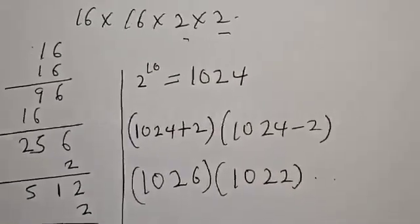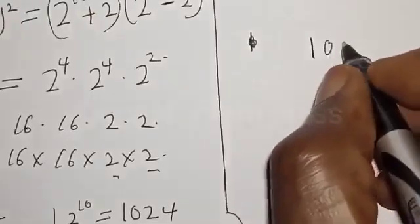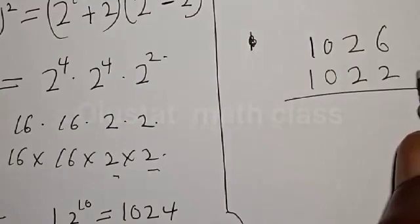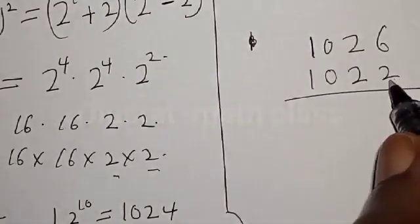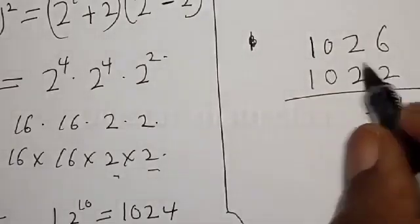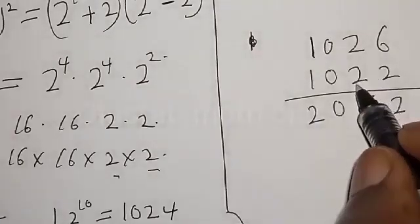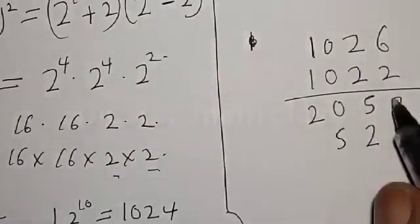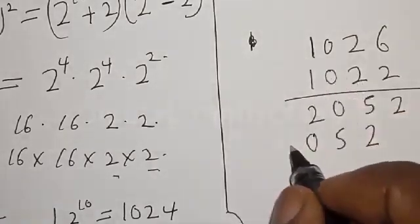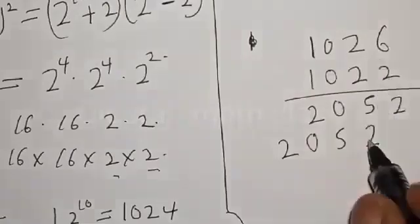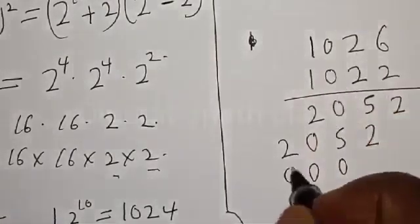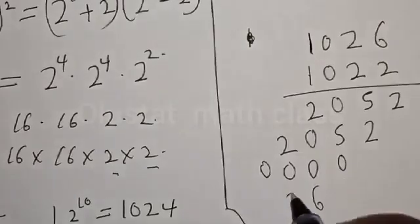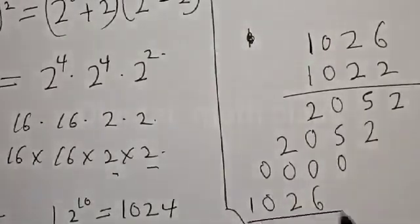Multiplying 1026 by 1022: 2 times 6 is 12, write 2 carry 1; 2 times 2 is 4 plus 1 is 5; 2 times 0 is 0; 2 times 1 is 2. Then 20 times 1026: 2 times 6 is 12, write 2 carry 1; 2 times 2 is 4 plus 1 is 5; 2 times 0 is 0; 2 times 1 is 2. Then 0 times 1026 gives all zeros. Then 1 times 1026: 1 times 6 is 6; 1 times 2 is 2; 1 times 0 is 0; 1 times 1 is 1. Now let's add everything together.